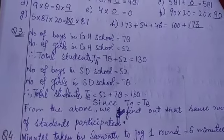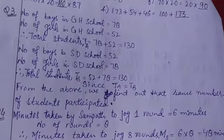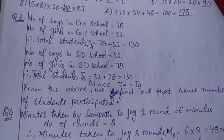Now if I see, I'll find out that this TA is equal to TB because both are 130 and 130. So from the above, we find out that the same number of students participated.